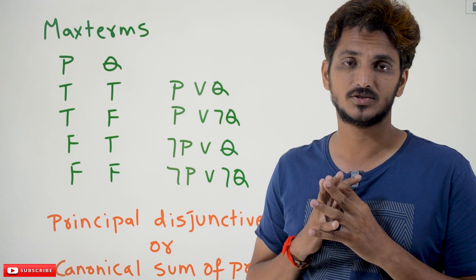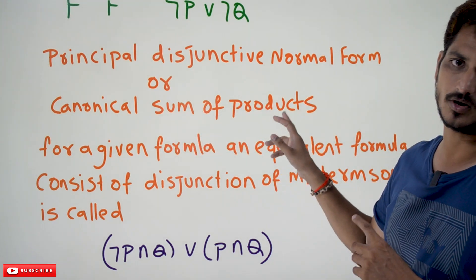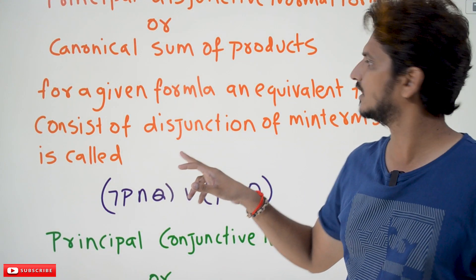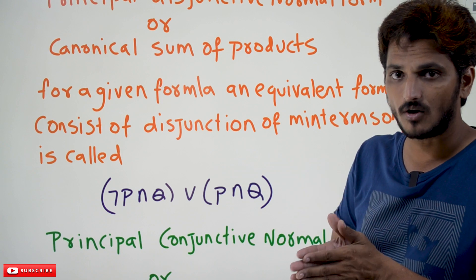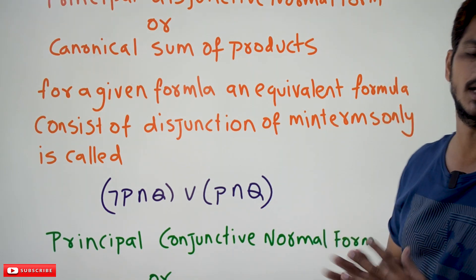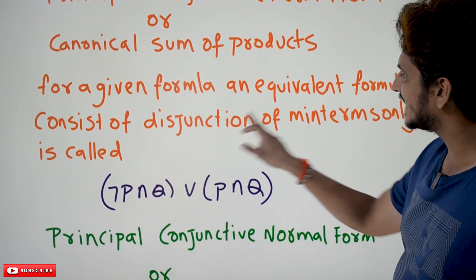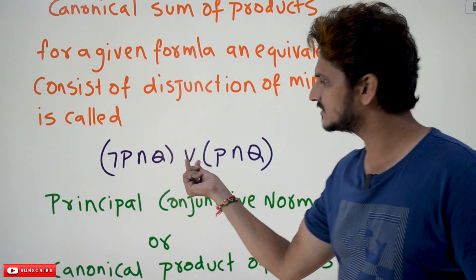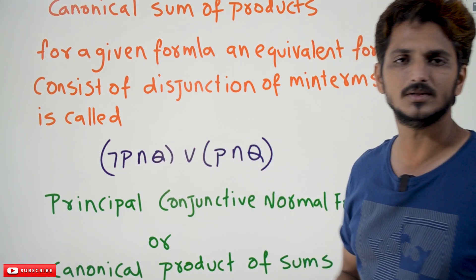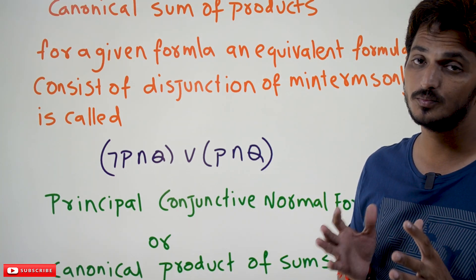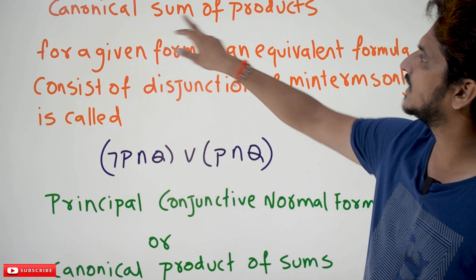Hope you understand what Min Terms and Max Terms mean. Next, you need to understand what is the principal disjunctive normal form, or we call it the canonical sum of products. For a given formula, you take any proposition and convert it into an equivalent formula consisting of a disjunction of Min Terms only. Then we call it the principal disjunctive normal form or canonical sum of products. Your equation should be in the form of disjunction of Min Terms.